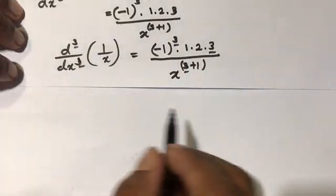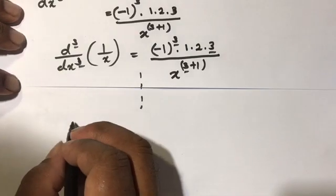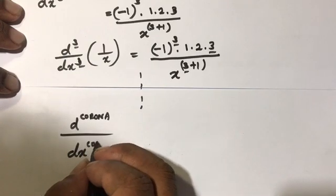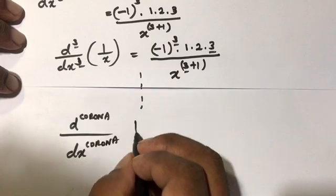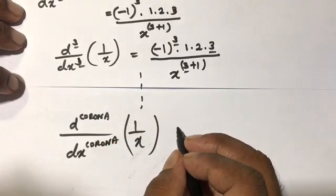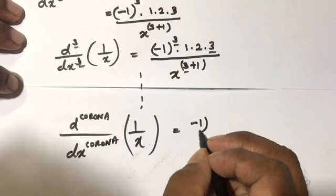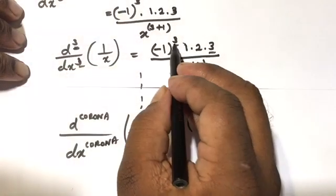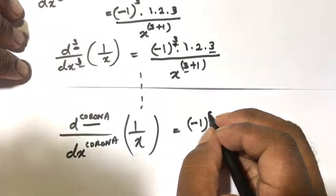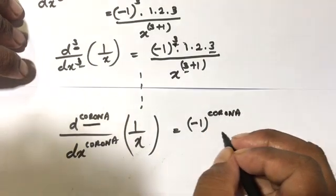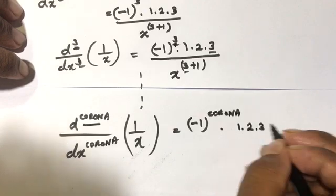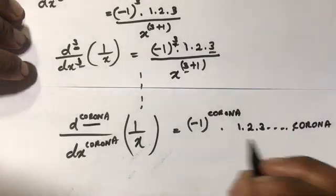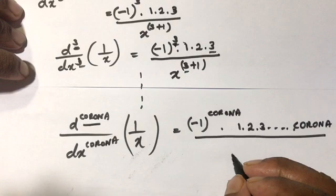According to this pattern, we can write the nth derivative of 1 over x as minus 1 to the n power times 1 times 2 times 3 dot dot dot n, over x to the n plus 1 power.